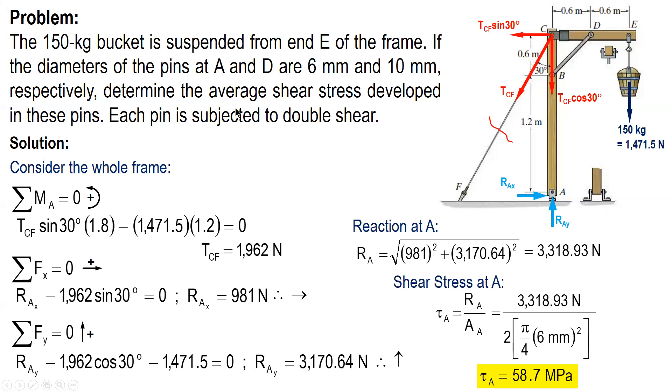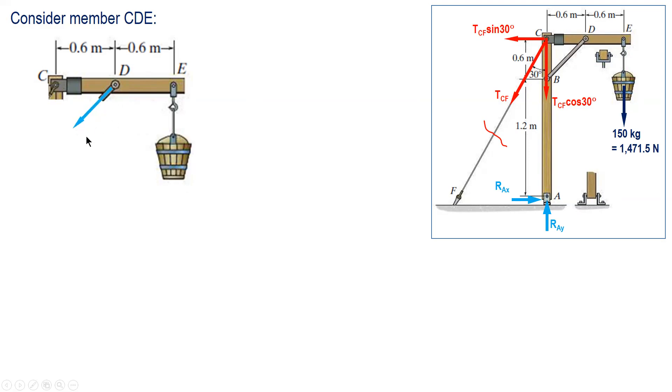And for the average shear stress at D, we need to dismember the frame. We isolate member CDE and solve for the force in link BD. So consider member CDE, this one, and we sum up moment at C. So let's assume tension, although it's clear here that it's compression, because of this force, this member will experience compressive stress or will be in compression. Let's just assume it's tension and later on prove that it is compression.